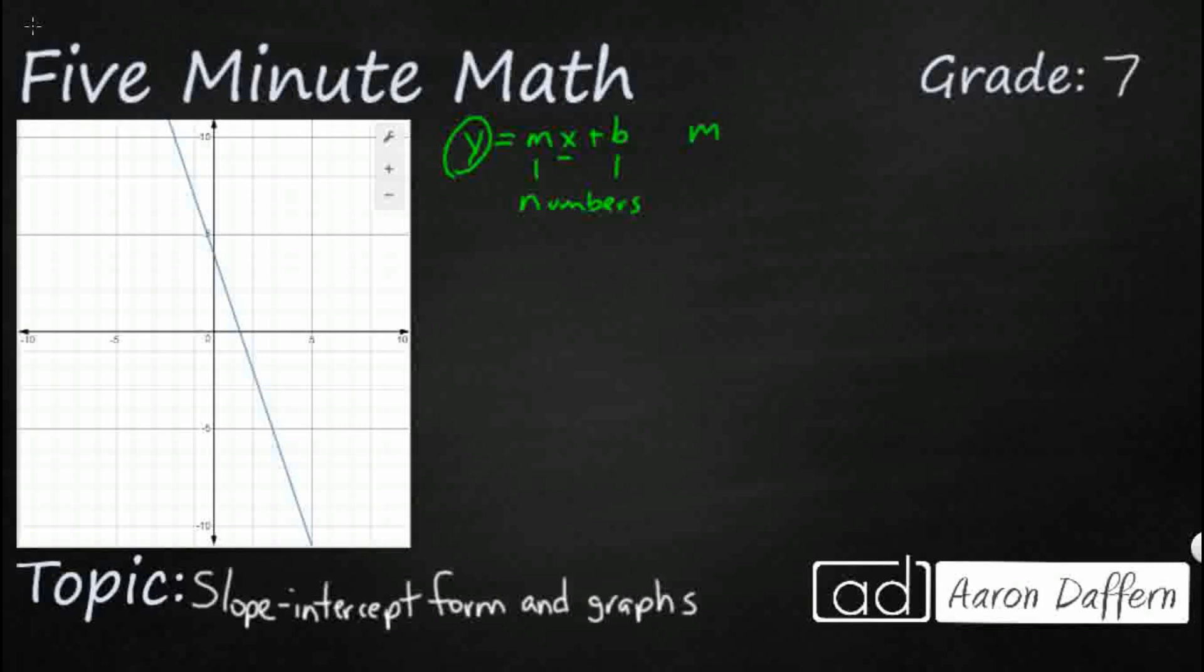So m is our slope. That is the slope, and we're going to see it on our graph right here, which equals the change in y. It's just a ratio. So how much does y change over how much does x change? So sometimes it's going to be a fraction. Sometimes it will end up being a whole number because it divides evenly.